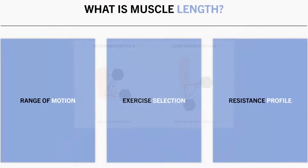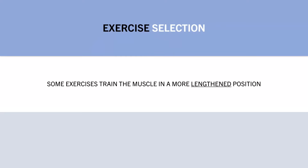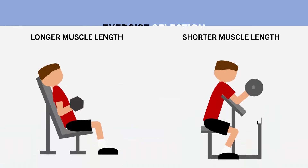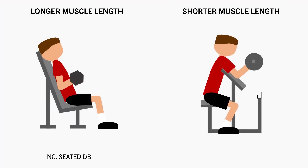The second way in which we can manipulate muscle length is via exercise selection. Some exercises train our muscles in a more stretched position than others. This is based on the anatomy of each muscle and the joint positions that each exercise requires us to train through. Some examples include the seated incline dumbbell curl training the biceps in a more stretched position than a preacher curl, even if full range of motion is performed for both exercises.